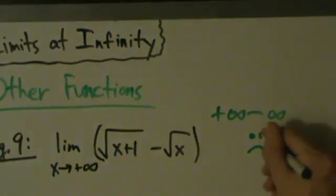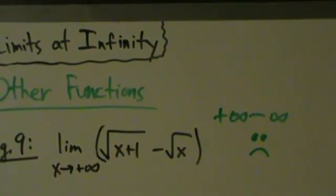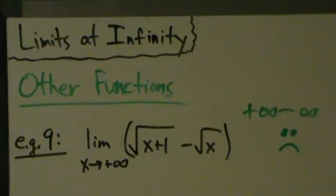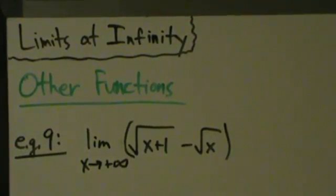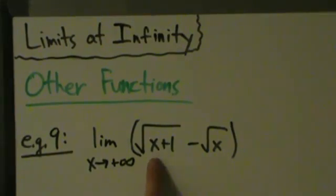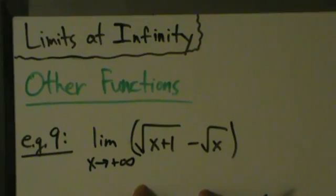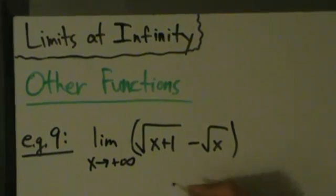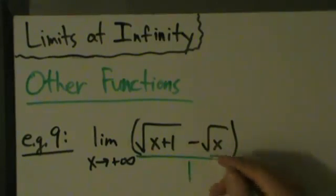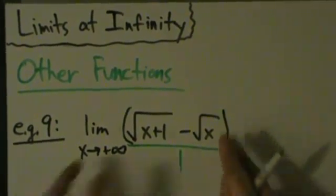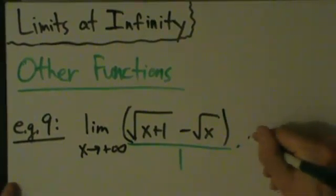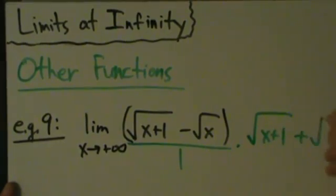There is something else we could do though — we're going to have to do another algebraic manipulation. If you see something with square roots and you're not sure where to go, just think about conjugates. So we're going to write this over 1, and then multiply the top and the bottom by the conjugate of the top: √(x+1) plus √x.